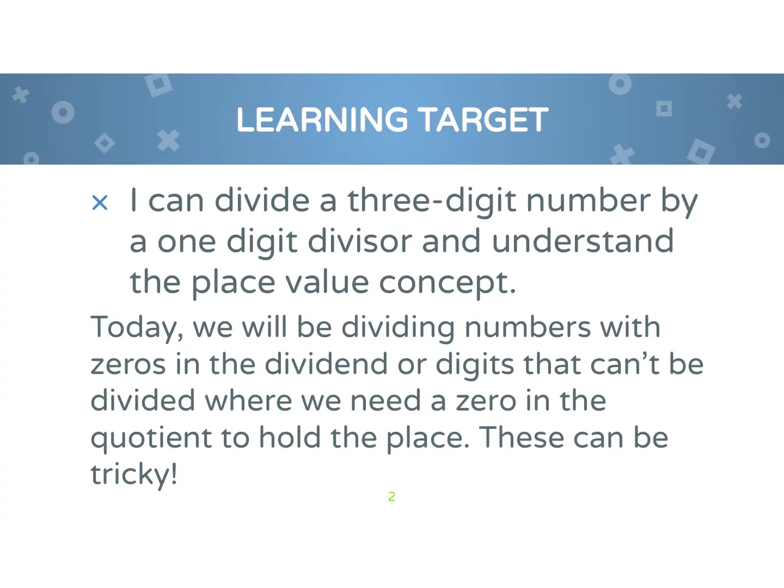Our learning target for today is I can divide a three-digit number by a one-digit divisor and understand the place value concept. Today, we will be dividing numbers with zeros in the dividend or digits that can't be divided where we need to add a zero to the quotient to hold the place.